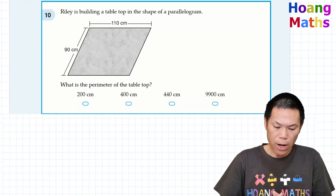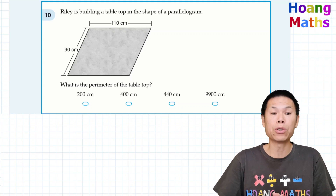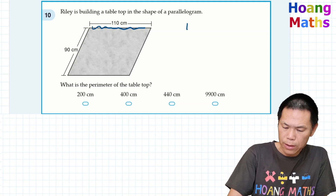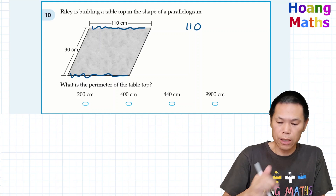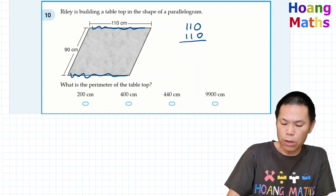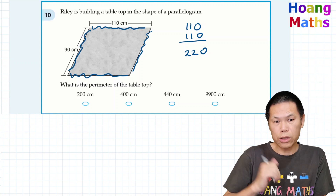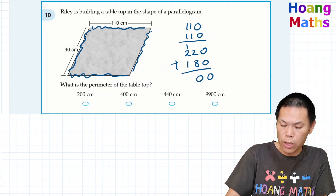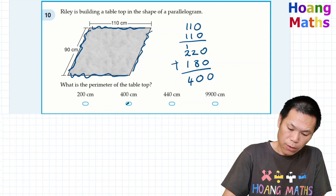Number 10: Riley is building a tabletop in the shape of a parallelogram. What is the perimeter? Opposite sides of a parallelogram are equal. We have 110 and 110 — that's 220. We have 90 and 90 — that's 180. Adding 220 plus 180: zero plus zero is zero, 2 plus 8 is 10, carry 1, 1 plus 1 plus 1 is... giving us 400 centimeters.